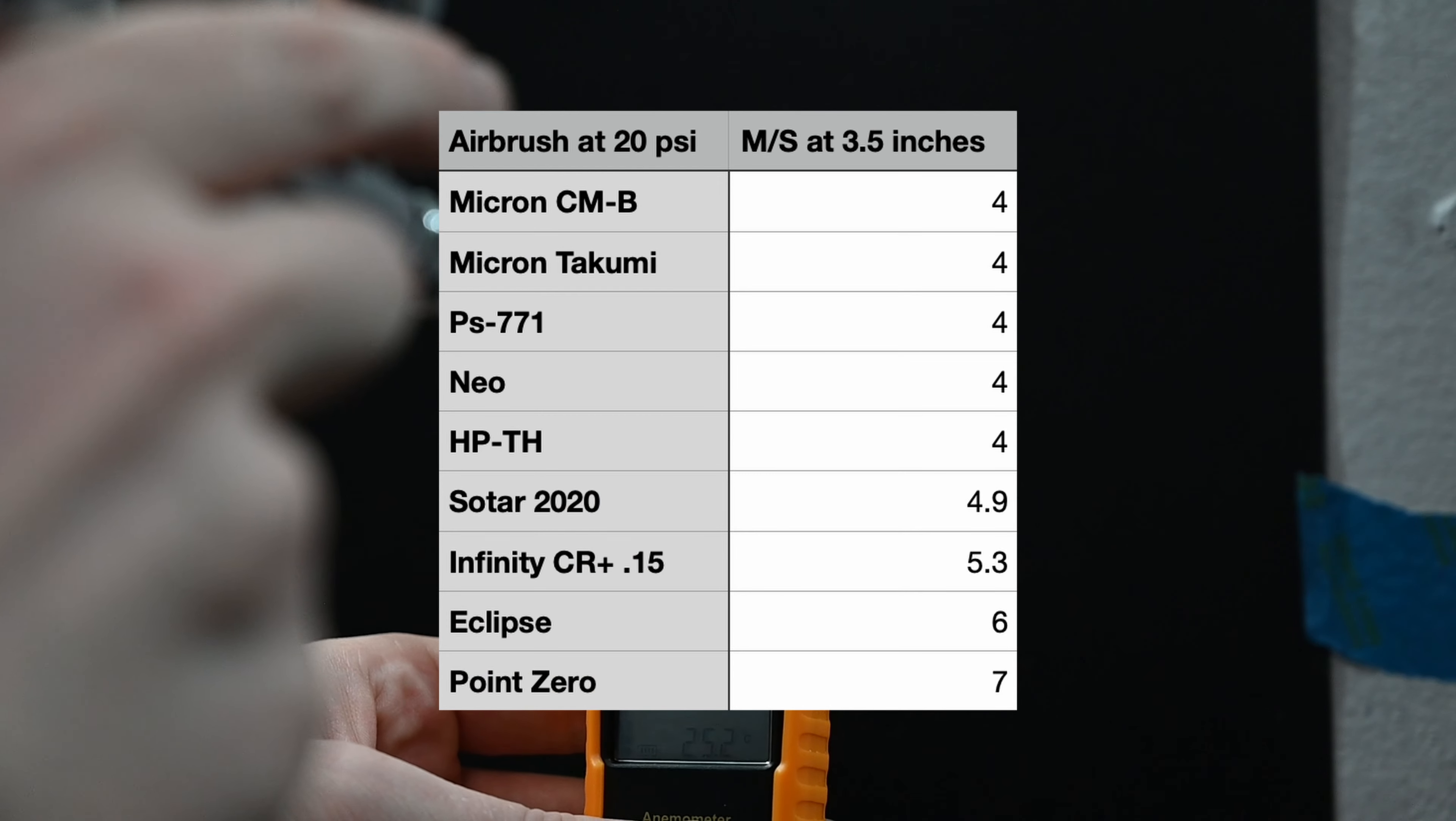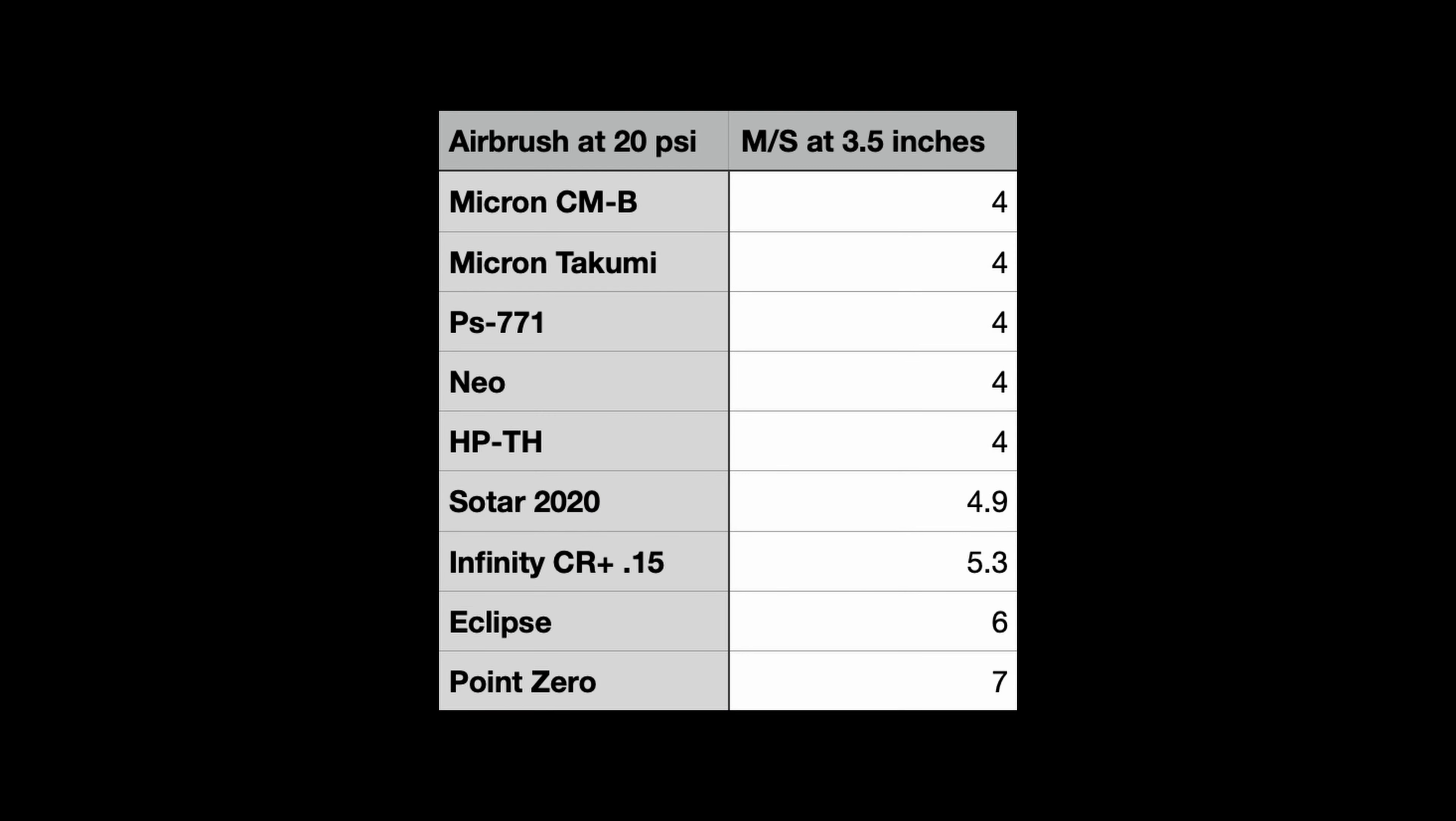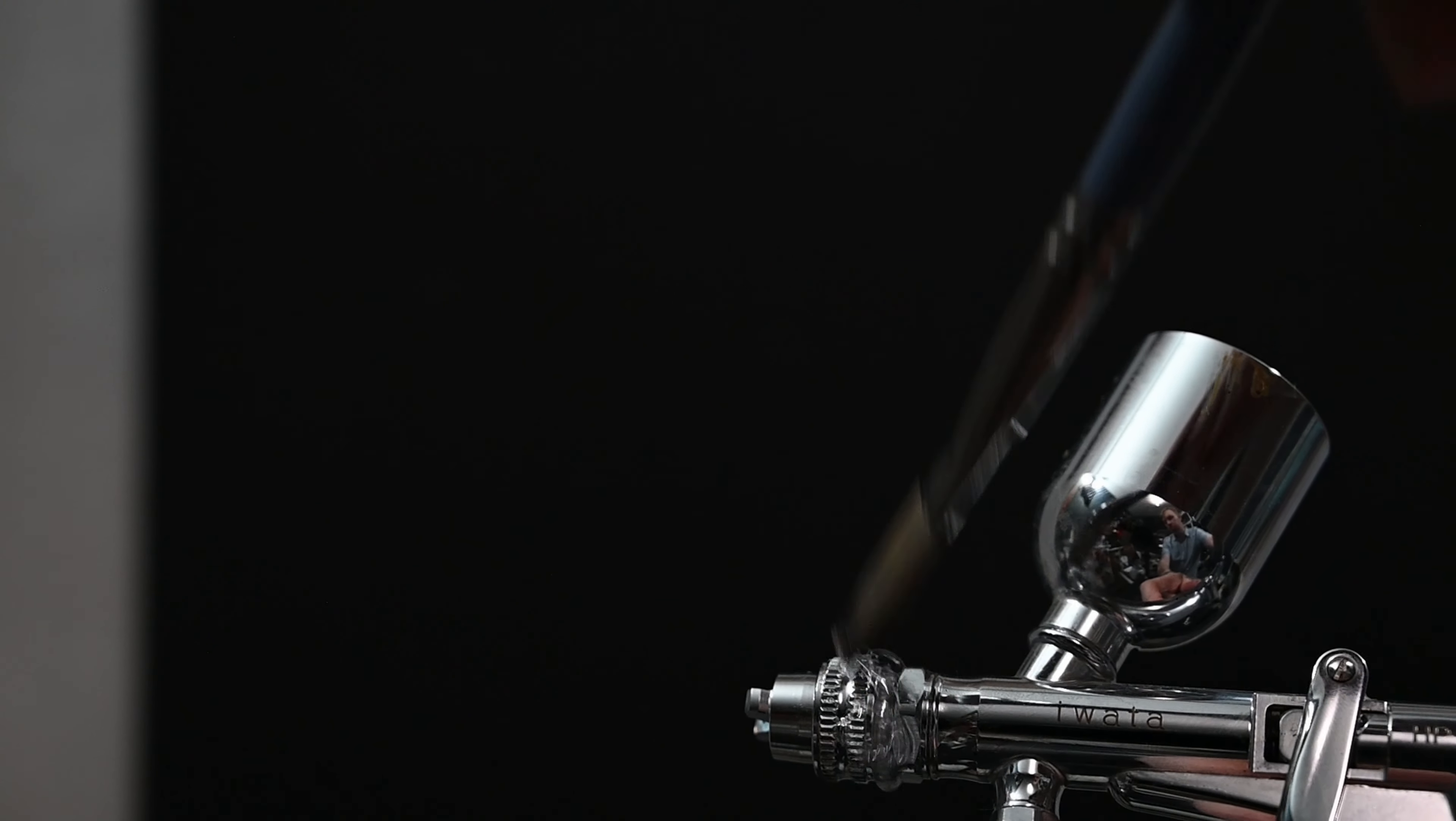Now this airbrush works differently than the other ones I reviewed but I'm checking the airspeed with the round cap and we can see that we get an airspeed of four meters per second at three and a half inches away spraying at 20 psi. This number is kind of pointless because this airbrush works so differently and it's meant to be sprayed at a higher psi but I'm including this number in case anyone's interested.